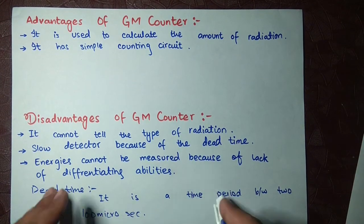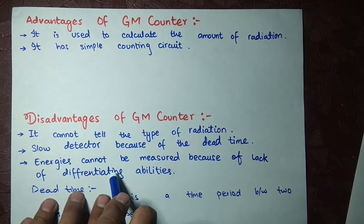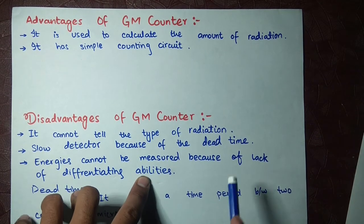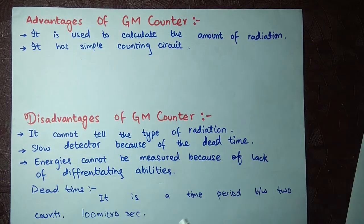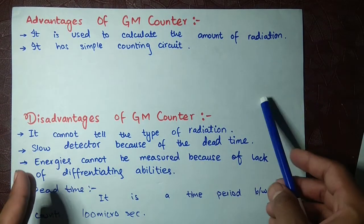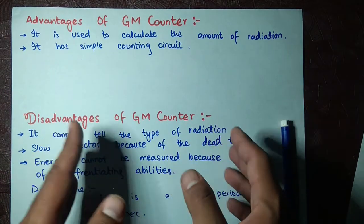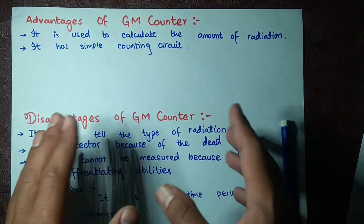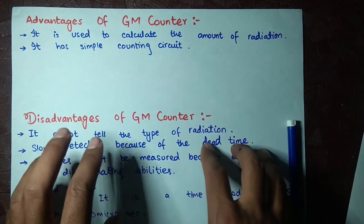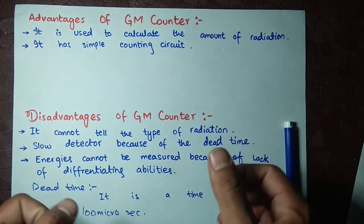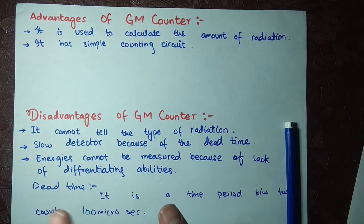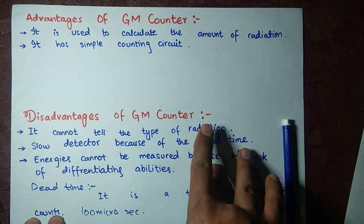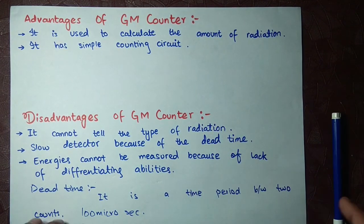Another disadvantage of the GM counter is that energies cannot be measured because of its lack of differentiating ability. A beta particle with higher energy than gamma cannot be distinguished — it makes a pulse with more electrons and more energy, but we only get one pulse. We cannot say whether it is beta or gamma or what energy it has.